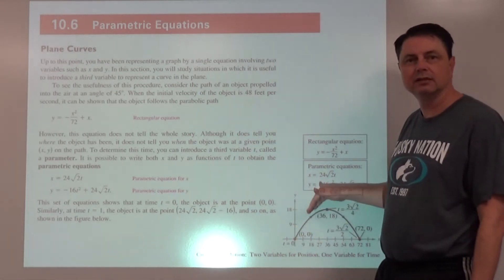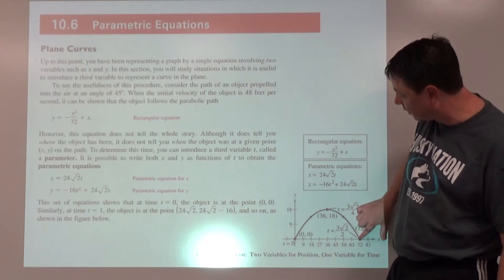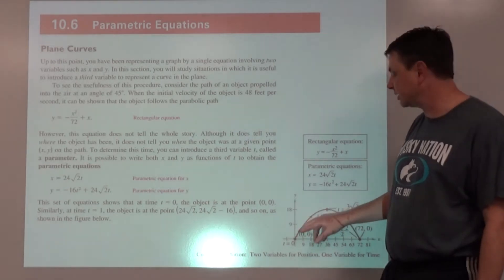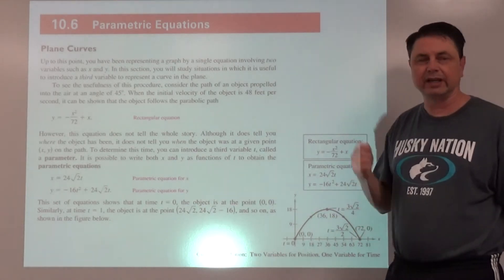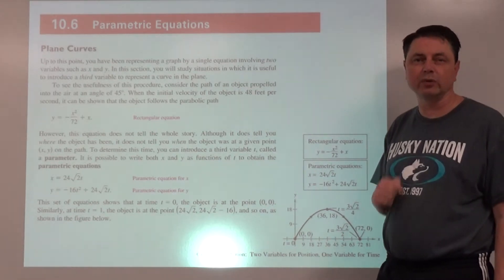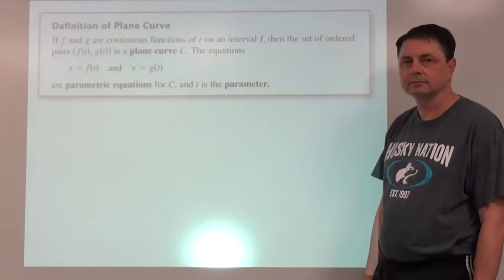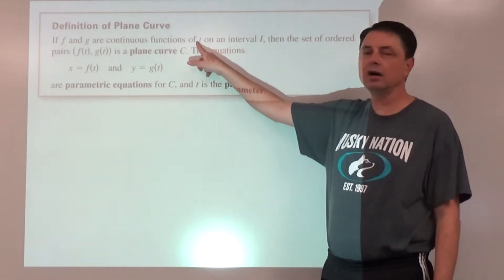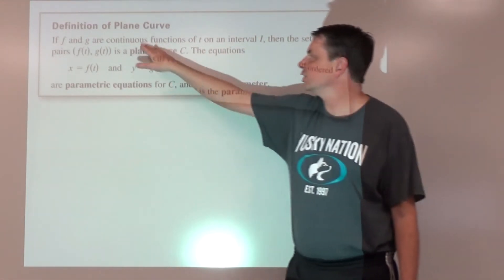We might be talking about a projectile following a path — launched, kicked, or hit with a golf club — where the projectile follows this motion. We look at it in terms of x and y, but it may be easier to think in terms of position over time: where is it after one second, two seconds, and so on. Parametric equations define x and y in terms of another variable t. We say f and g are continuous functions of a parameter t on an interval I.